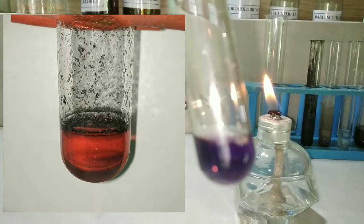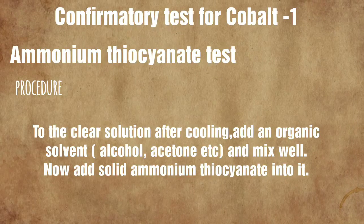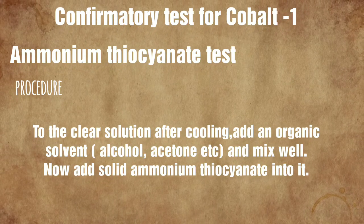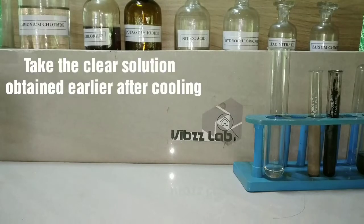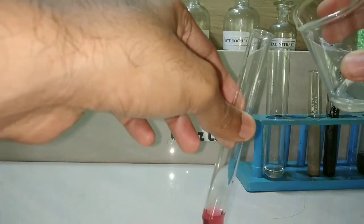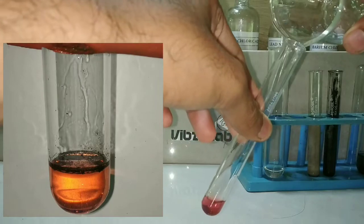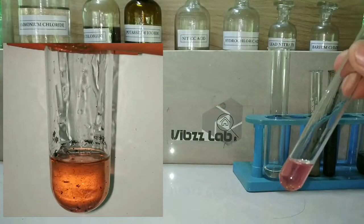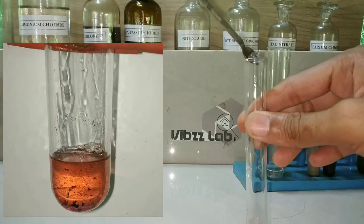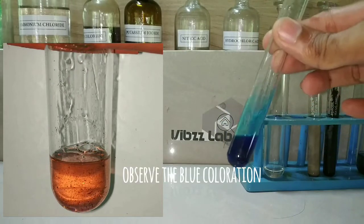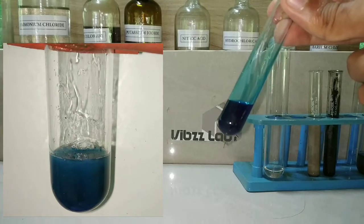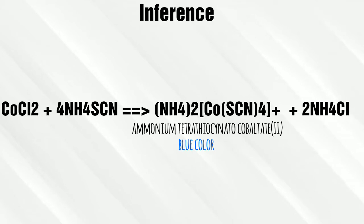This dissolution in aqua regia is given by both nickel and cobalt salts. Now we move on to the first confirmatory test for cobalt: the ammonium thiocyanate test. We take the cooled clear solution and add an organic solvent — isopropyl alcohol, amyl alcohol, or acetone can be used. Then we add solid ammonium thiocyanate. You can observe a beautiful blue color due to formation of the complex ammonium tetrathiocyanatocobaltate(II).